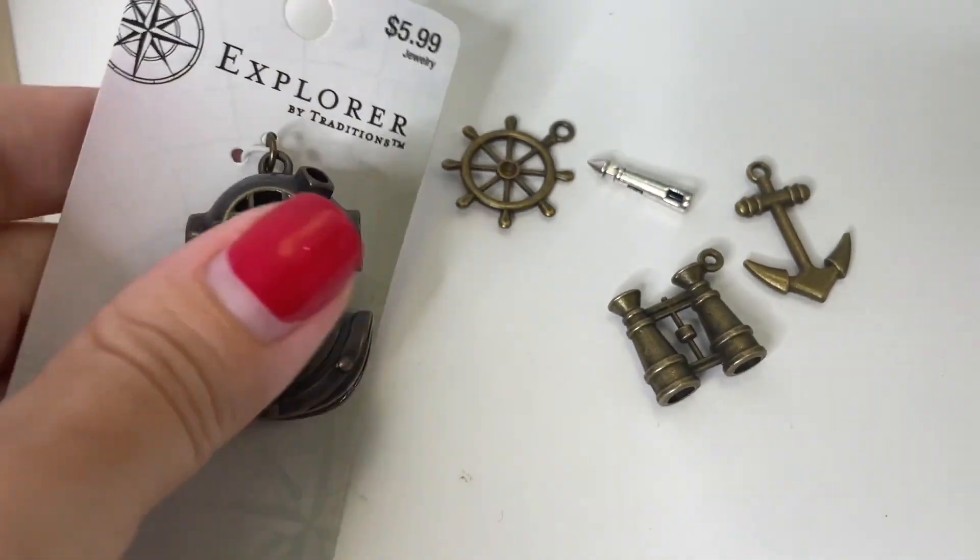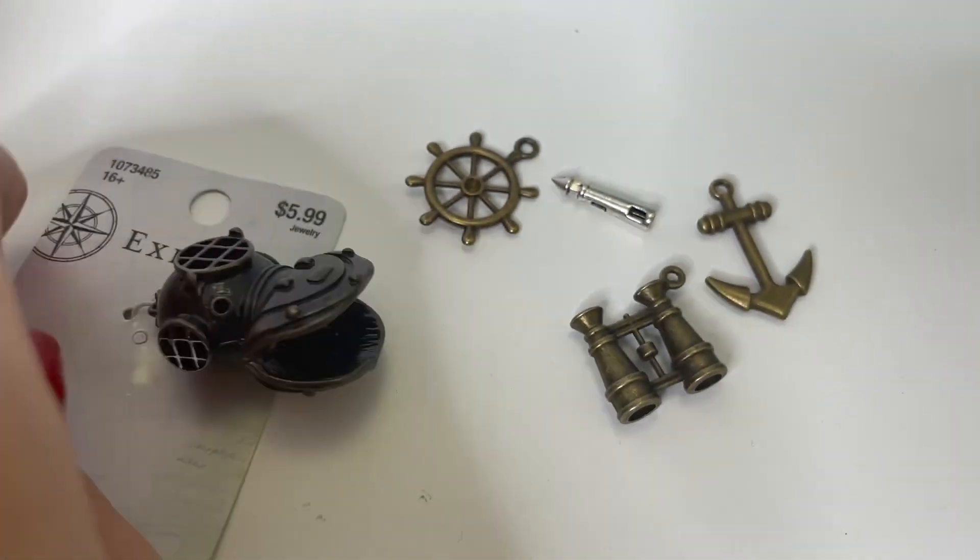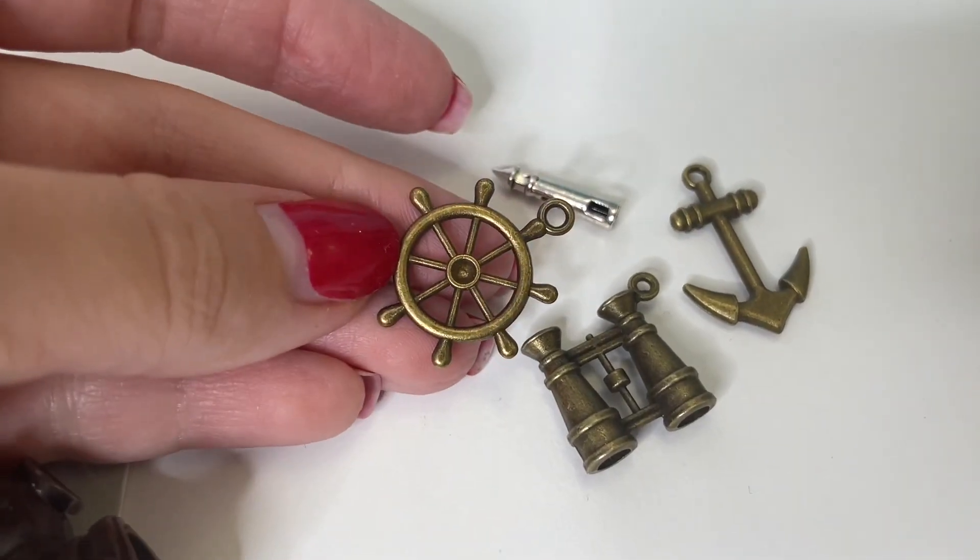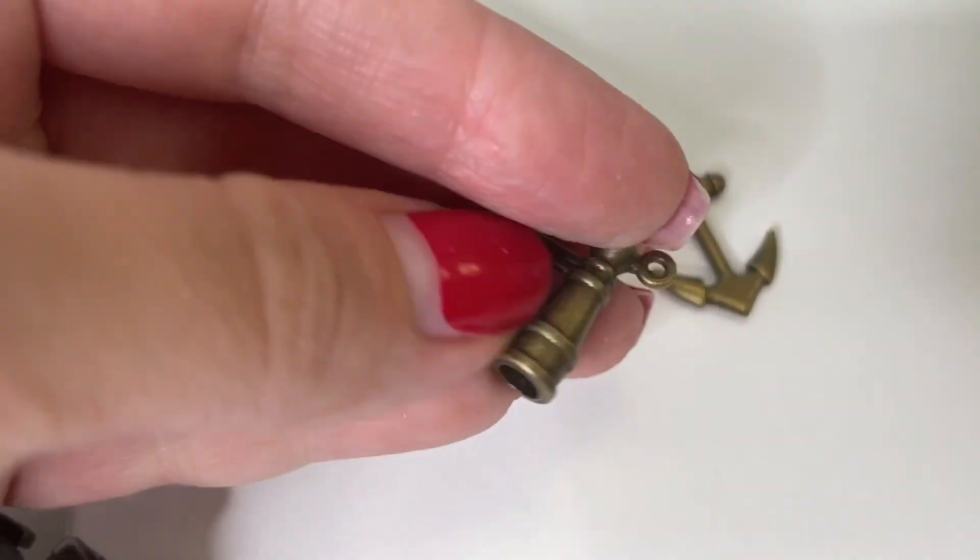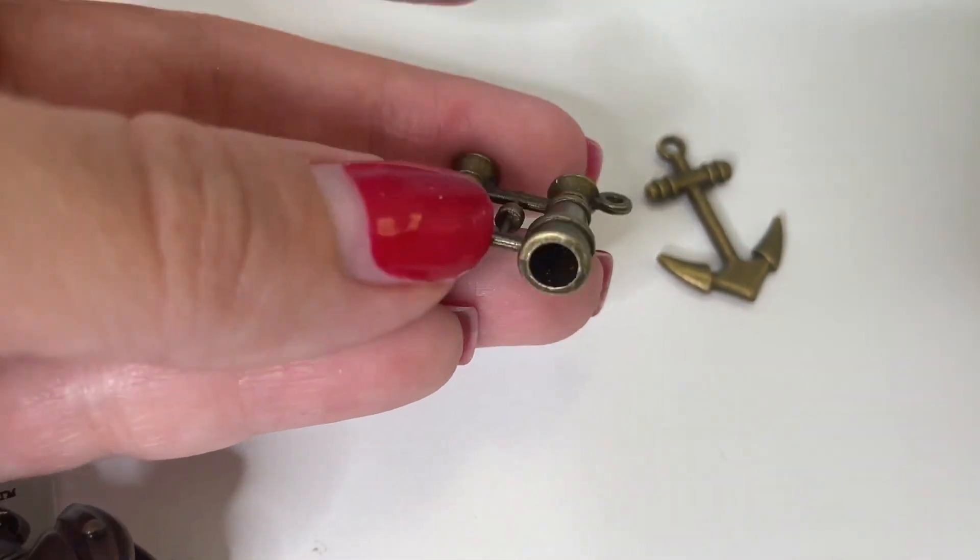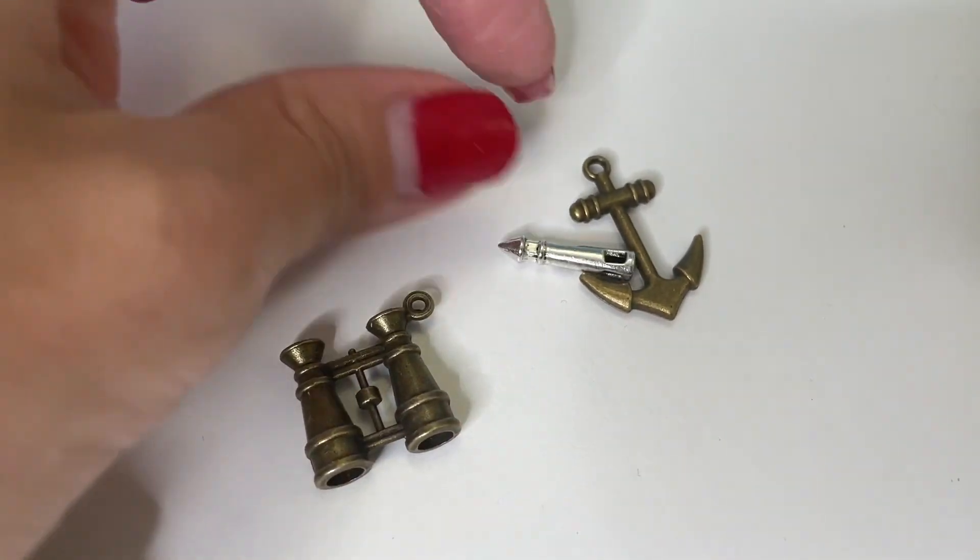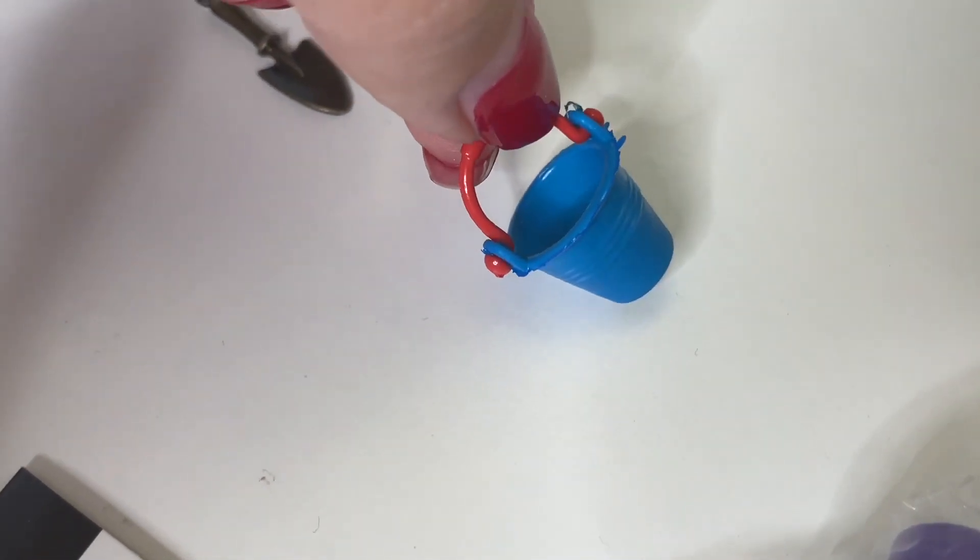And I have some of these charms that are going to be perfect for my beach themed cabinet. Jewelry charms make really great miniatures. Now I'll put a link down below to the ones that I am using here today. I also have some of these miniature buckets that I found at Michael's and these will be perfect to add some shells inside.